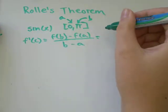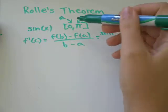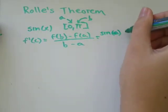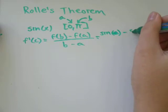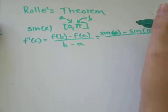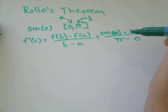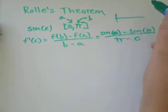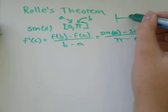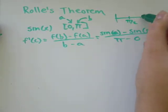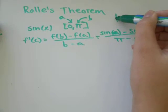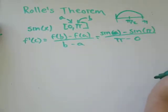So f of b will be sin of a, which is zero, minus f of b will be sin of pi over b minus a, which would be pi minus zero. Sine of a, if you think about your sin graph, let's call that pi over two and that pi. Sine looks like that from zero to pi.